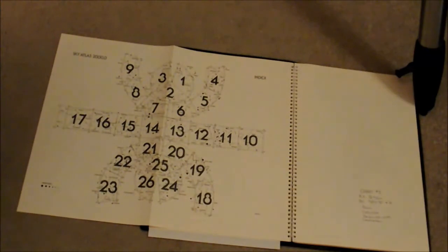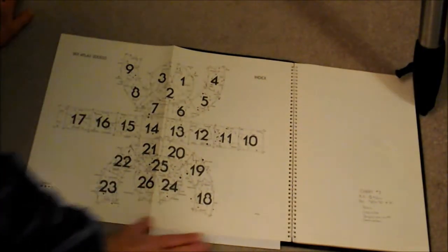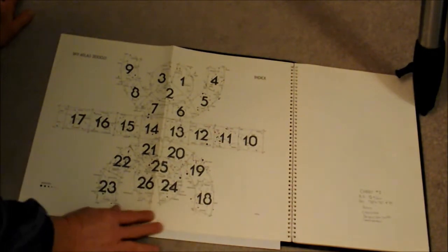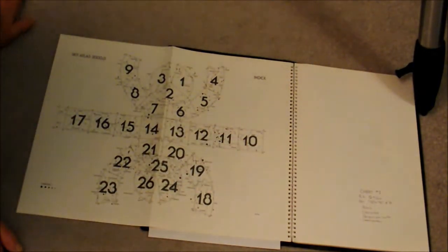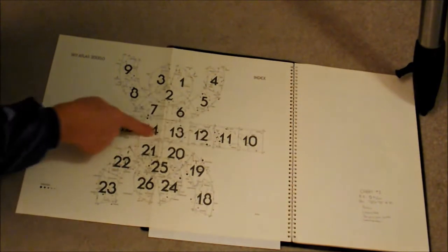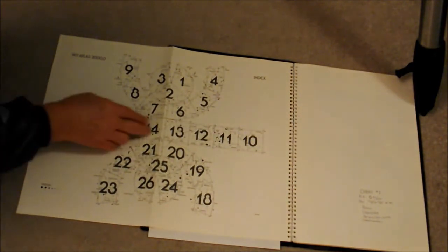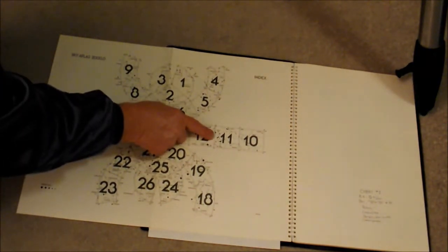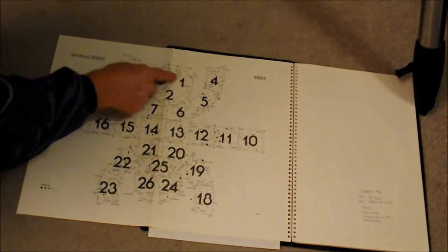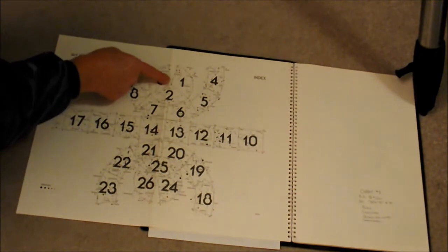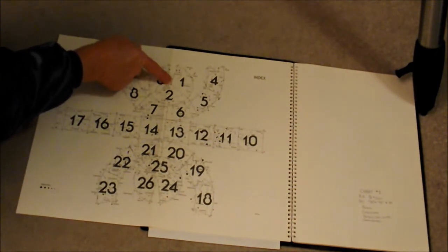This atlas has 26 different pages. When you're looking at this here, your index area, this is kind of a quick reference so that you can find which page to use. Now this area here is near the equator. Constellation Orion's over here. And then up here is your northern hemisphere and up here is where you're getting up by Polaris and the North Star. The center of this is the North Star.